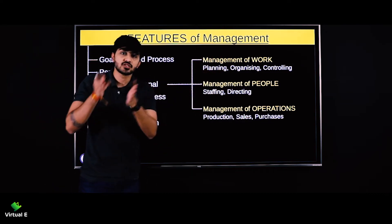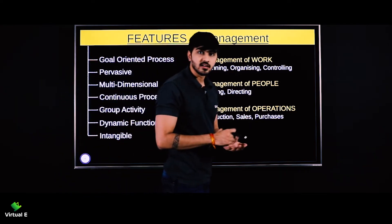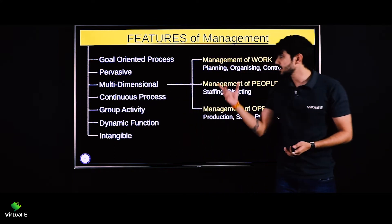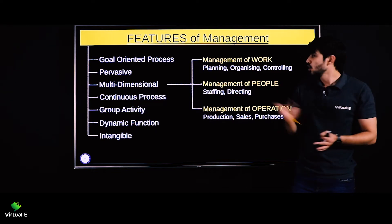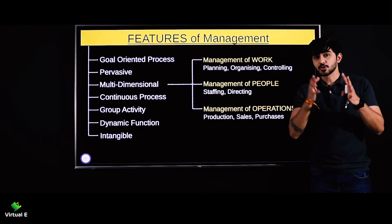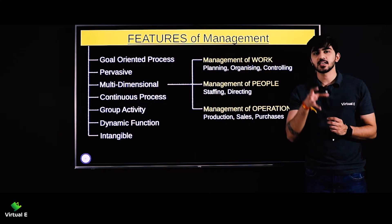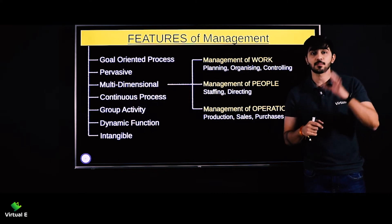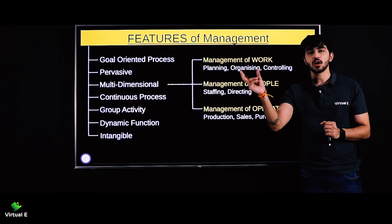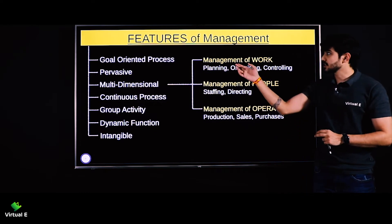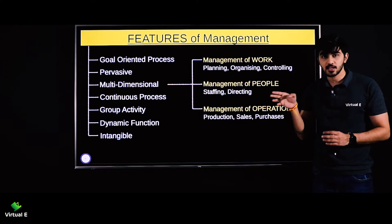Management of work — management kyun ho raha hai? Just to do the work, get things done by others. Management of work ka matlab ho gaya kaam karana. Hum kaise kaam karayenge? Hum plan karayenge properly ki hume kya kaam karana hai, hum organize karayenge wo sare resources jo hume kaam karne mein madad karayenge, aur hum control karayenge. Controlling ka matlab hota hai basically to compare your actual output with your planned output. Let's say aapka actual output tha 1000 units and your planned output was 1200 units — aapne dekha ki actual output did not match planned output. That is management of work.